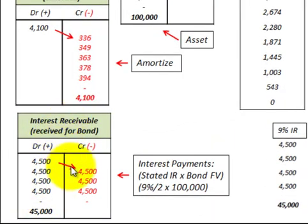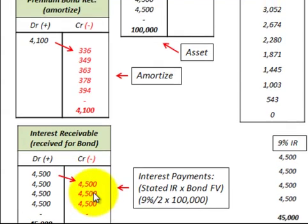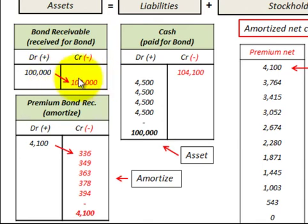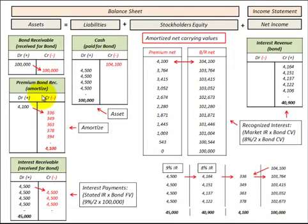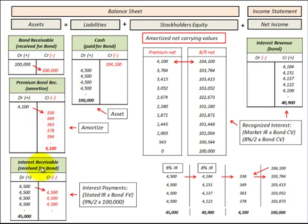The interest receivable is reduced by the interest payments received each period. Once the bond matures, the bonds receivable account is reduced by that face value amount. The cash account is increased by the $4,500 interest payments each period and also by the $100,000 maturity value. In summary, the premium to bonds receivable was a balancing account between bonds receivable and cash, and between interest receivable and interest revenue — covering all journal entries for a bonds receivable purchased at a premium.